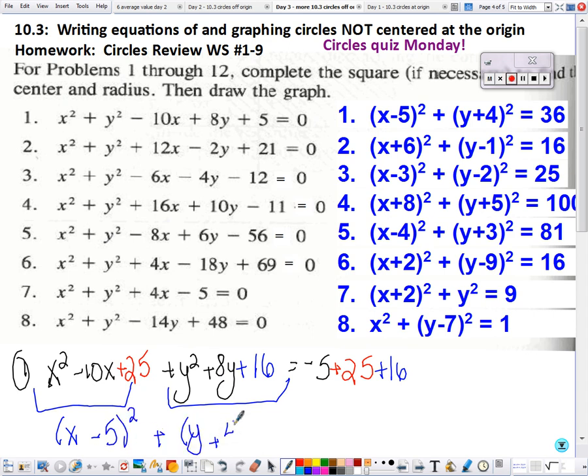Half of -10 is -5. Half of positive 8 is positive 4. Combining these like terms we get 36.